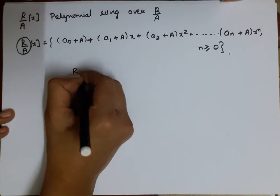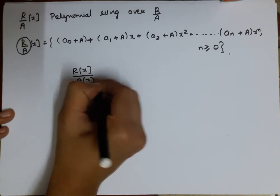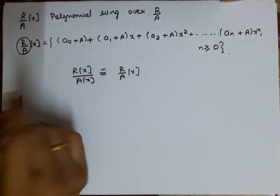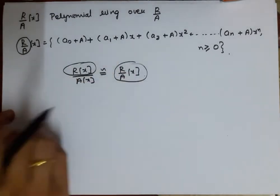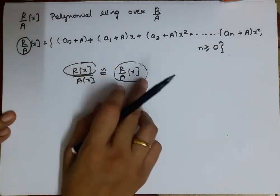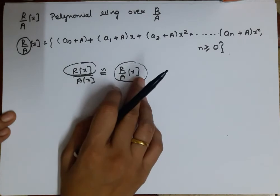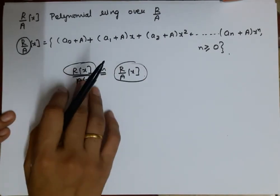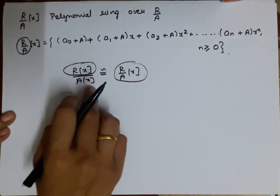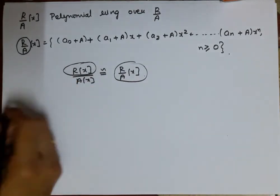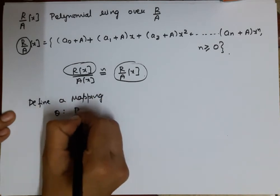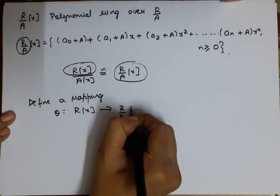Now we have to define the mapping — we have to define the isomorphism between R[x]/A[x] and R/A[x]. You will get a hint: we are going to use the fundamental theorem of ring homomorphism. We will show that there is a well-defined onto homomorphism θ, so that by the fundamental theorem, R[x]/ker(θ) is isomorphic to R/A[x], and the kernel will be exactly A[x]. Define a mapping θ from R[x] to R/A[x].